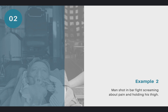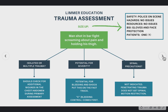Here's our second case: a man shot in a bar fight, screaming about pain and holding his thigh. Let's look at our size-up. We have police on scene. We don't believe we have any current hazards, although with a bar fight and people shot, we're always going to be careful. We have gloves and face protection simply because there could be some splashing blood here. It looks like we have one patient. Now we're going to our mechanism.